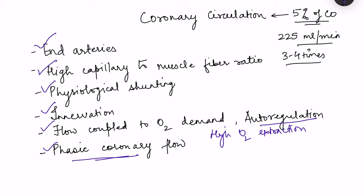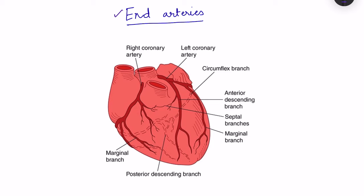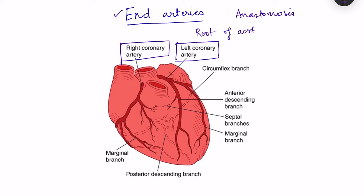The first characteristic is that coronary arteries are end arteries, meaning there is hardly any anastomosis between them. The major coronary arteries are the right coronary artery and the left coronary artery, both arising from the root of the aorta. The left coronary artery supplies the anterior and lateral parts of the left ventricle, while the right coronary artery supplies the right ventricle and the posterior part of the left ventricle in most people.